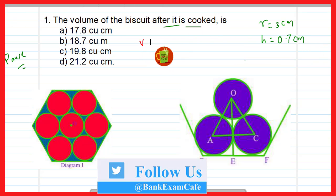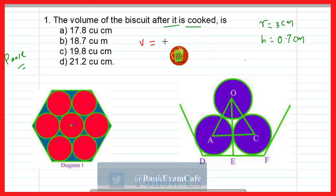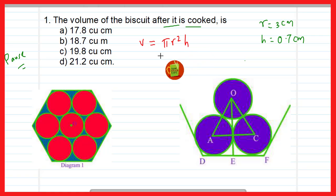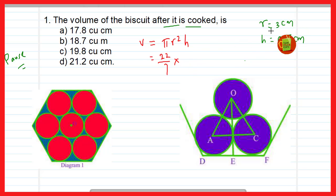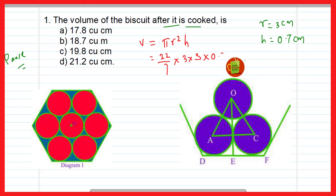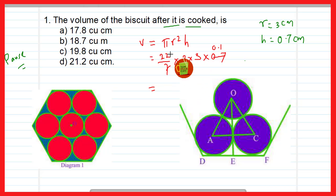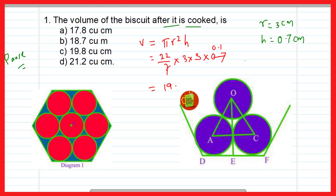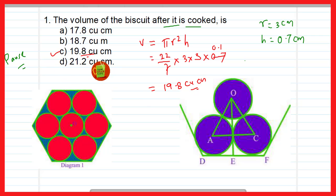We find the volume of the biscuit after cooking using the formula π r² h. So: (22/7) × 3² × 0.7 = (22/7) × 9 × 0.7. Simplifying: 7 and 0.7 gives 0.1, then 22 × 9 × 0.1 = 19.8 cubic centimeters. Therefore, option C — 19.8 cubic centimeters — is correct.